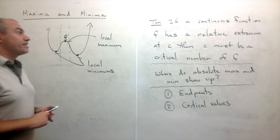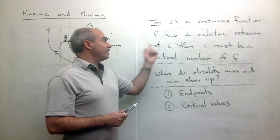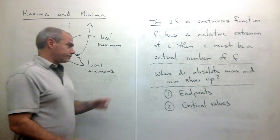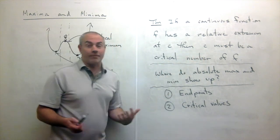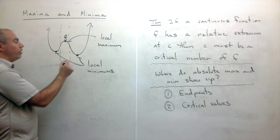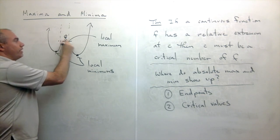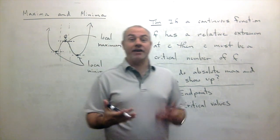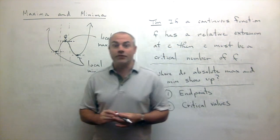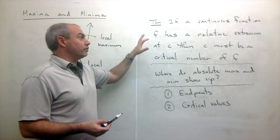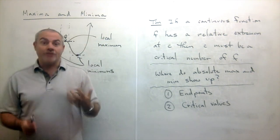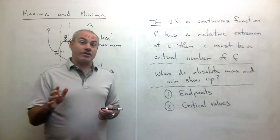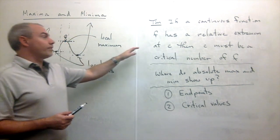Here's the theorem: if a continuous function f has a relative extremum — a local max or min — at c, then c must be one of those critical numbers. Looking at the tops and bottoms of hills on a graph, those points all have horizontal tangent lines, or possibly vertical tangent lines. So every local max or min occurs at a critical number. Now, not every critical number has a local max or min — that's not true — but every relative extremum happens at a critical number.